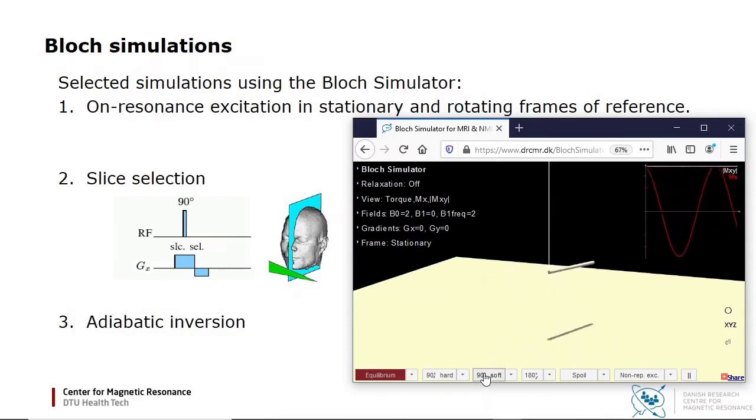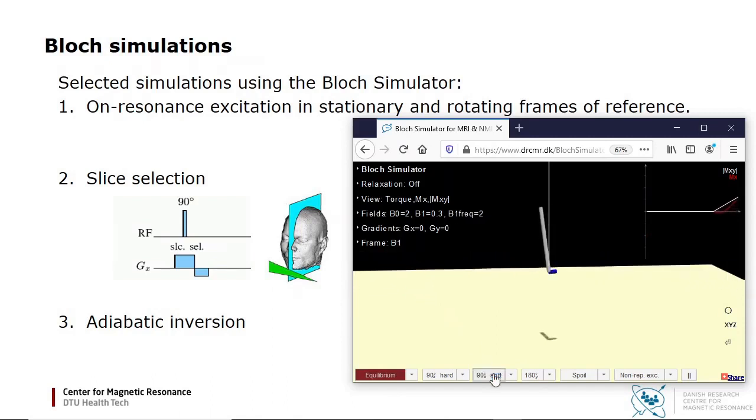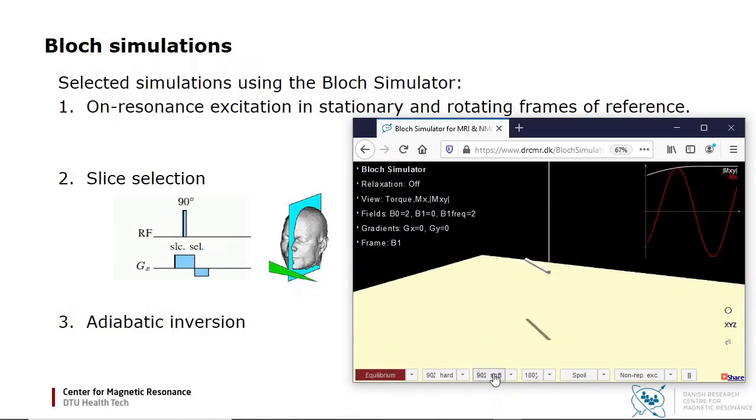Now let's see the same 90 degree pulse in the frame of reference rotating at the RF frequency. First I go to equilibrium, and change the frame of reference. Then I apply the 90 degree pulse, and you will see the effective field vector as a blue bar. You see that the magnetization precesses around the effective field vector, which is transversal, since the pulse is applied on resonance.